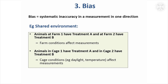So that was generalizability. The other thing that, if you jump ahead to reporting your results, you might want to think about is: are there things that might bias the results and invalidate them? Bias is a systematic inaccuracy in a measurement in one direction.